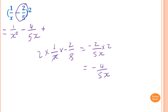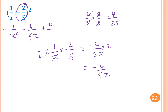Then add (−2/5)² — which is the same as 2/5 times 2/5 — so 2 times 2 is 4 and 5 times 5 is 25, giving 4/25. So the result is 1/x² − 4/(5x) + 4/25.